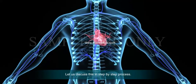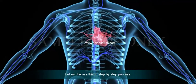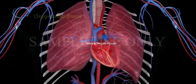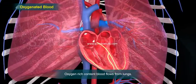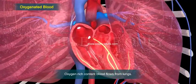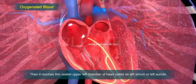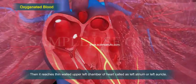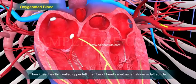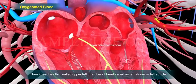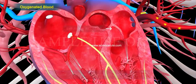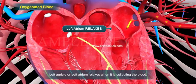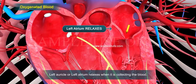Let us discuss this in a step-by-step process. Oxygenated blood, the oxygen-rich blood, flows from the lungs and reaches the thin-walled upper left chamber of the heart, called the left atrium or left auricle. The left auricle or left atrium relaxes when it is collecting the blood.